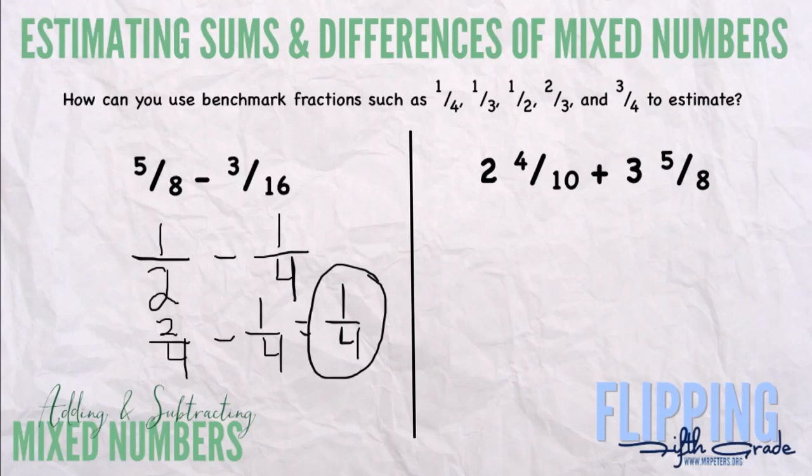So we have two and four-tenths plus three and five-eighths. Well, I'm going to keep the two, and four-tenths is awfully close to a half, five-tenths, and three and five-eighths is also three and a half.